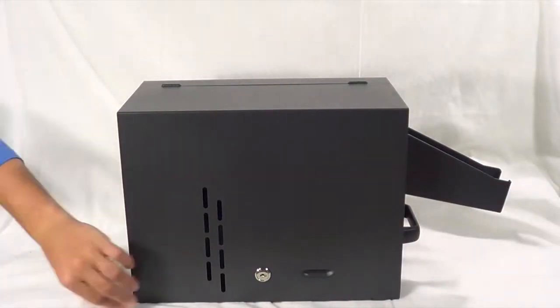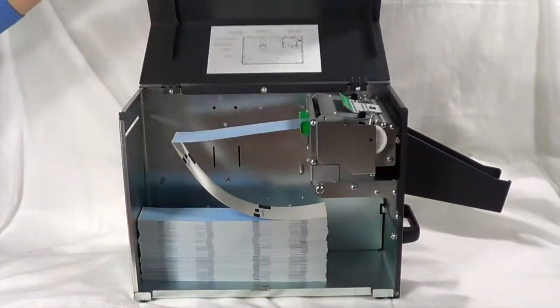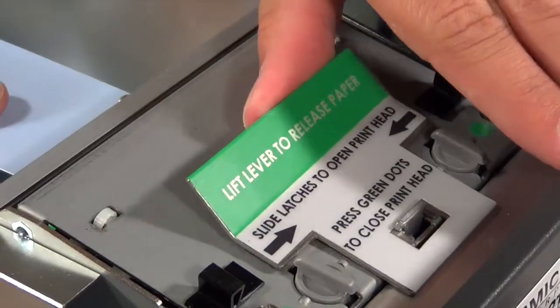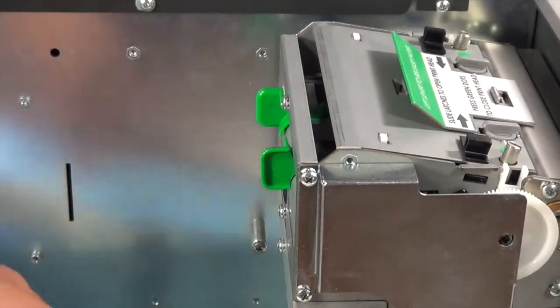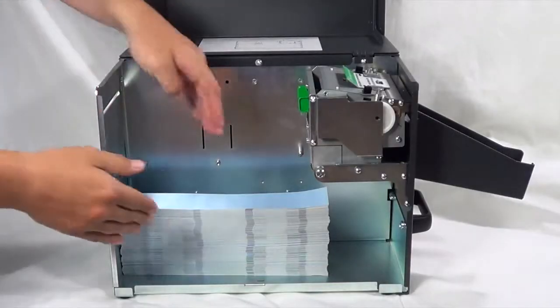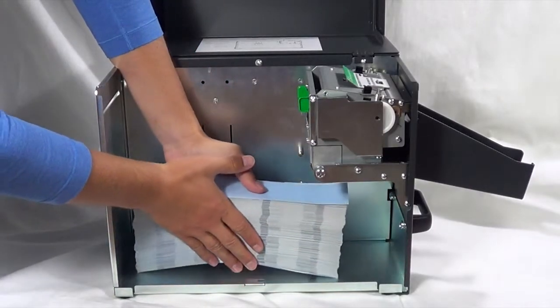Open the side housing door by lifting up on the handle. Remove media by lifting the lever and pulling the media out of the feed pad. Remove media from housing.